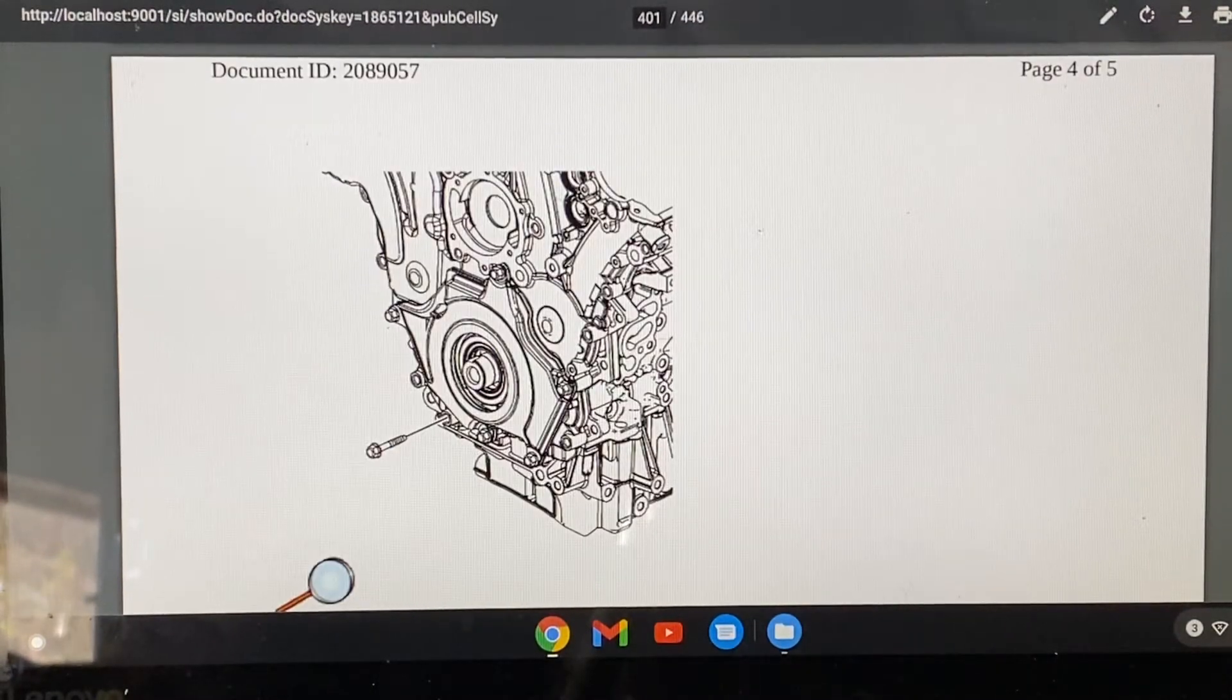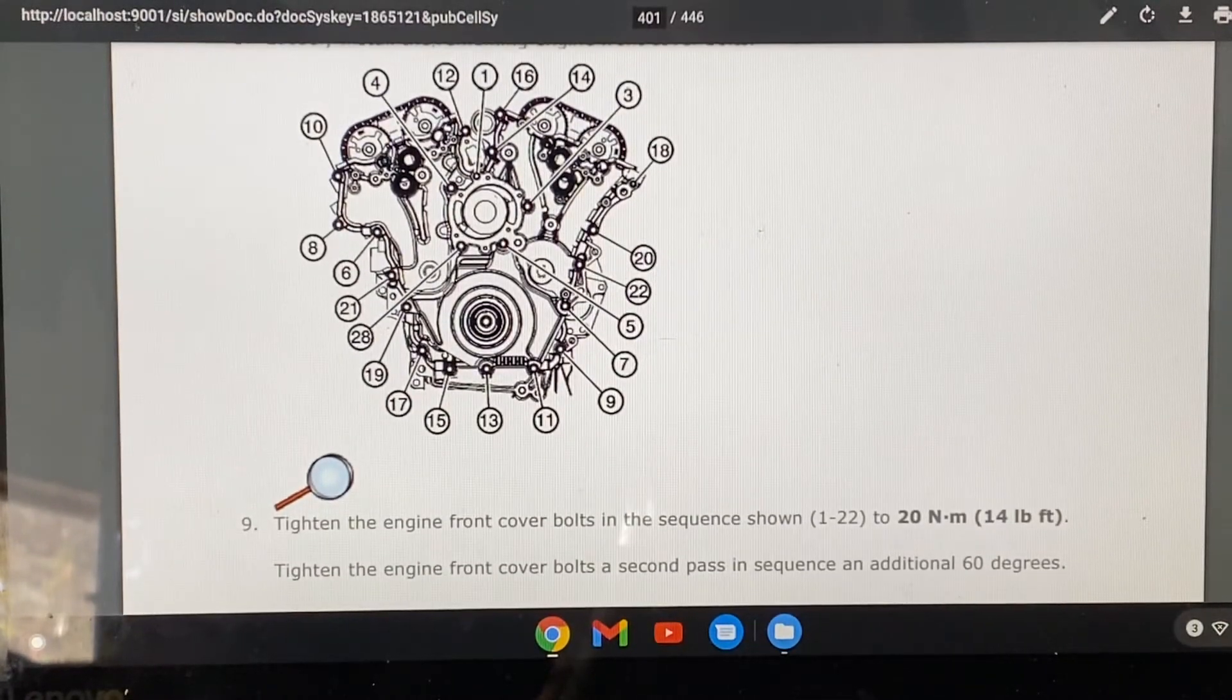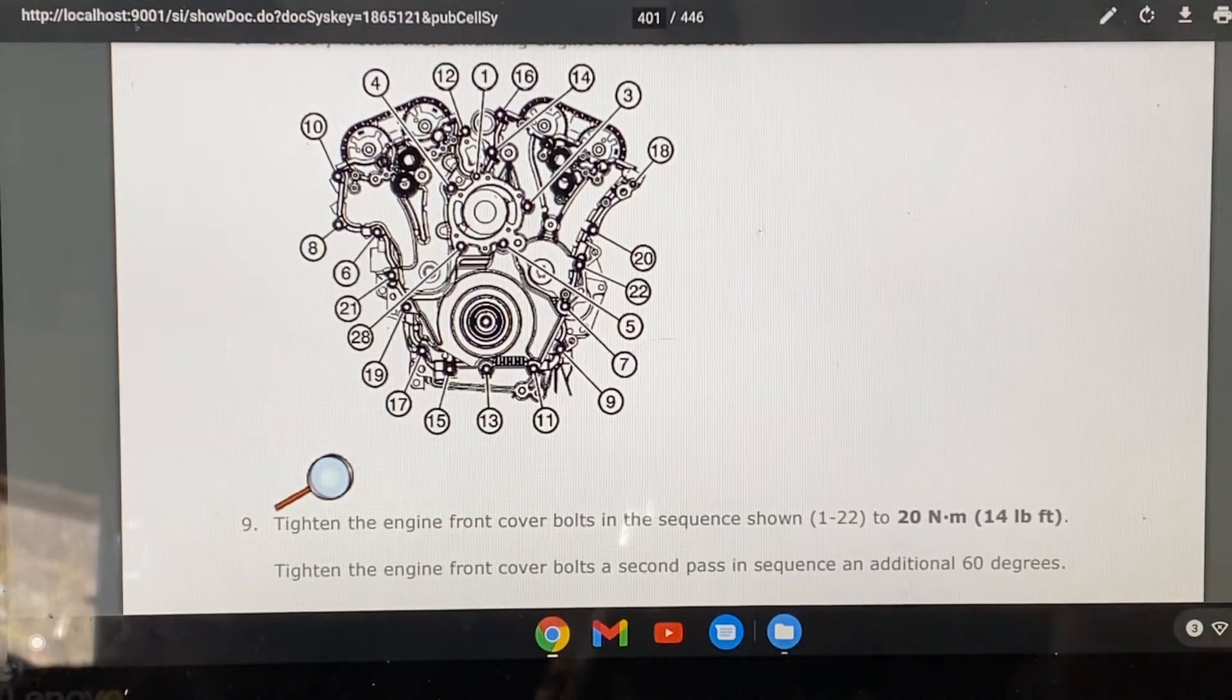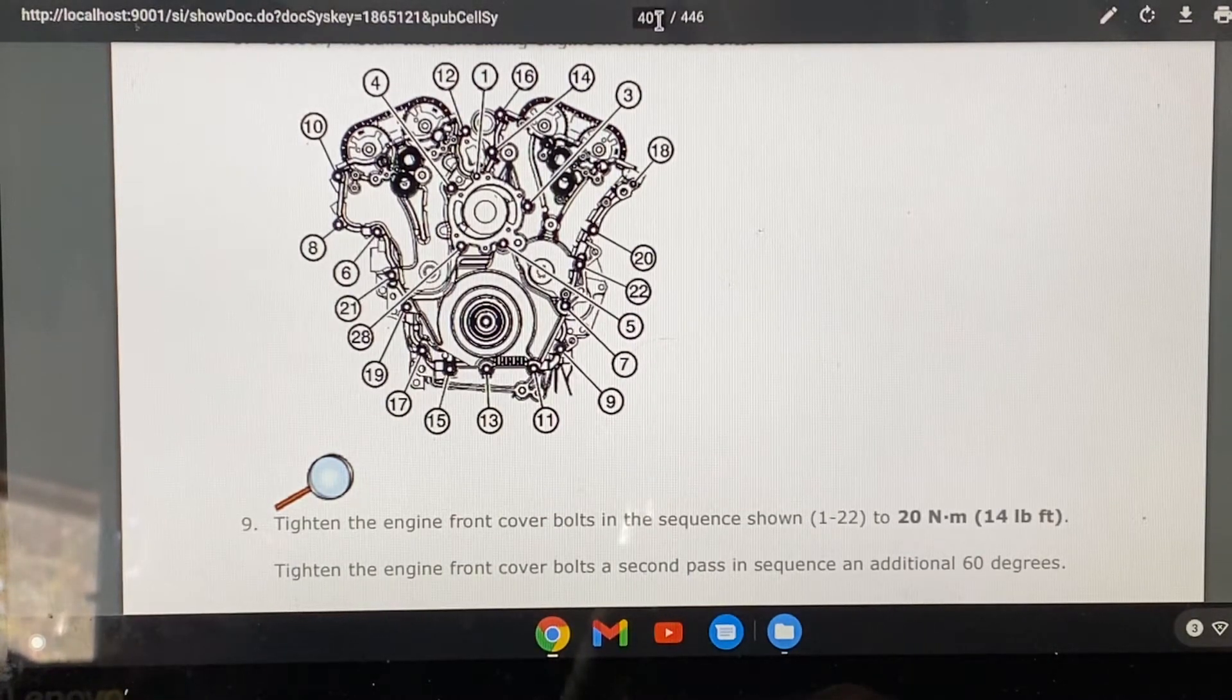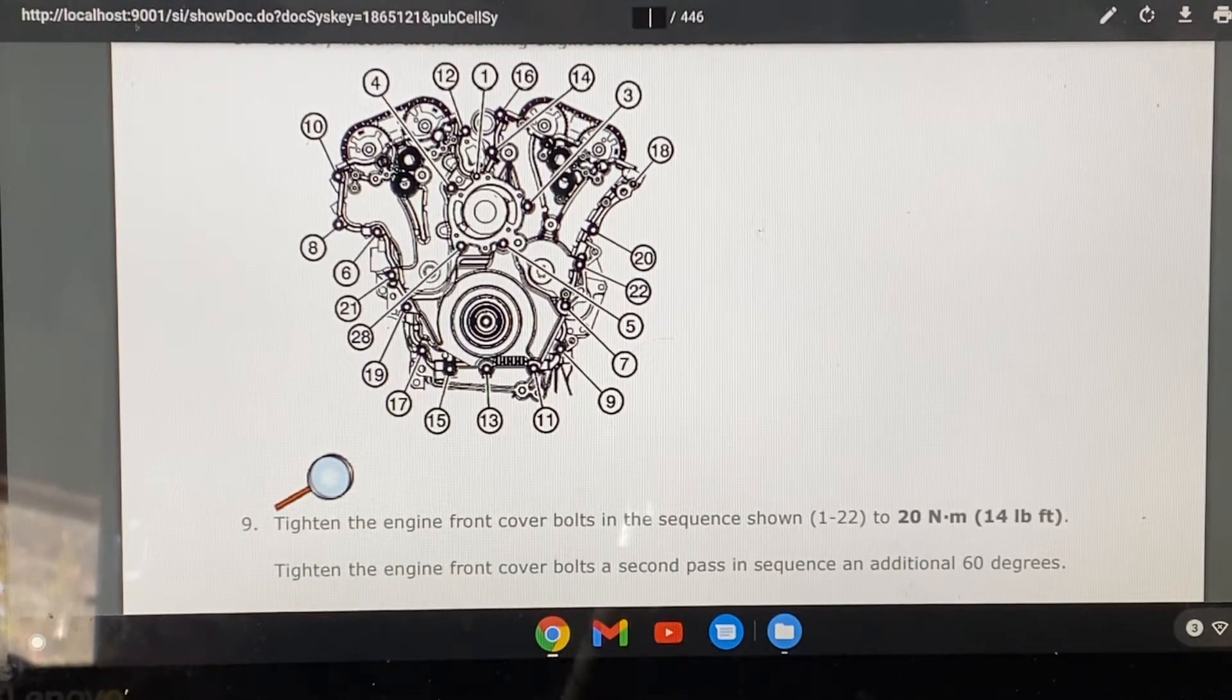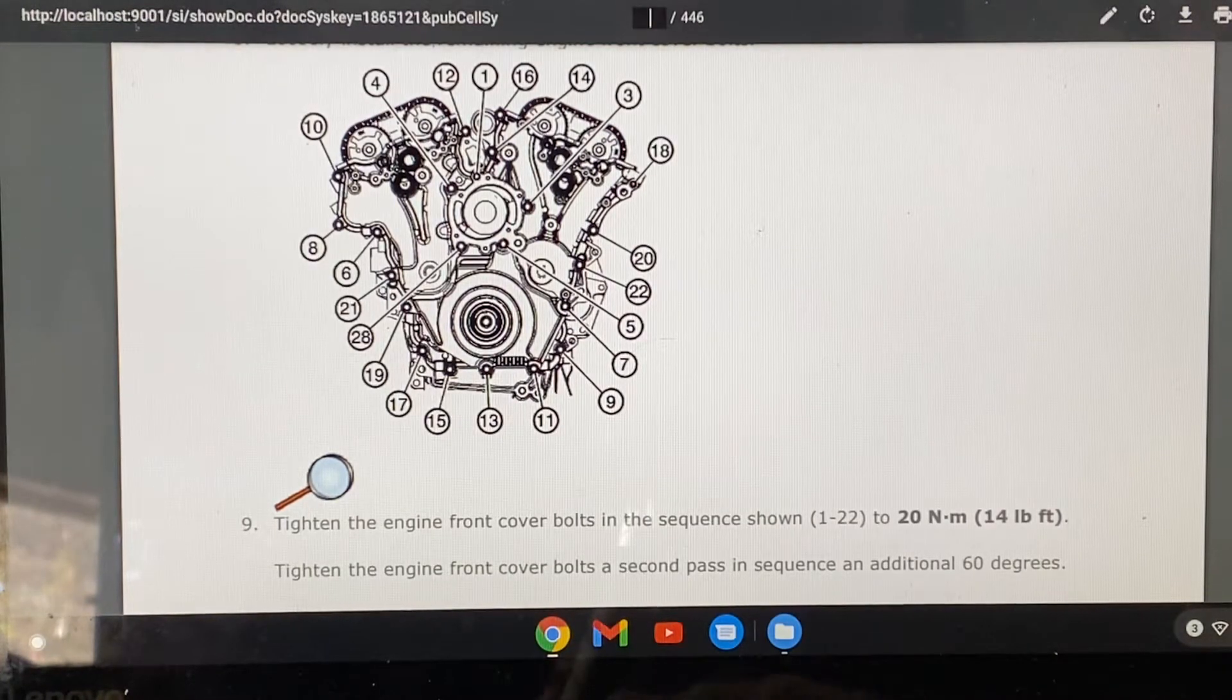This is the front engine cover sequence, or the timing cover sequence, and 14 foot-pounds. Hopefully you guys can zoom on this if you need to. I'm going to try to put this on my channel just as torque specs for this engine so hopefully anybody that looks that up will find it.